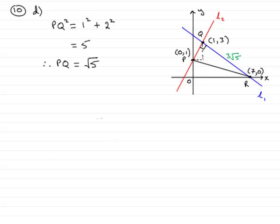So we now have the two lengths, QR is 3 root 5 and PQ, we'll just put it in there, is root 5 units long.